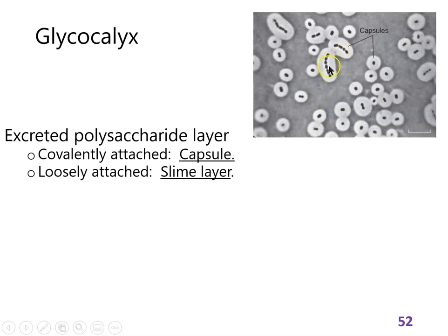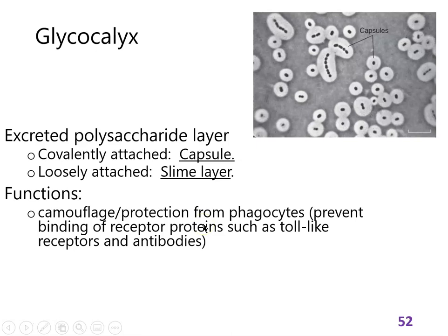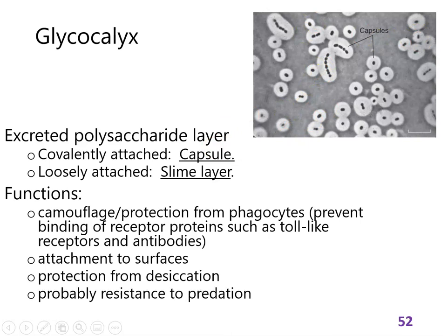The capsule might be much bigger than the bacteria itself. Why would they make a layer of polysaccharides around them? It camouflages them — it makes it hard for them to be phagocytosed by macrophages, neutrophils, or dendritic cells. It also prevents proteins from binding to them. We don't make antibodies very well against carbohydrates — we make antibodies against proteins — so if a cell wraps itself in carbohydrates, our antibodies will just bounce off. They also help with attachment and help the cell avoid drying out. They're probably older than vertebrates and immune systems, likely originally evolving to protect these bacteria from being eaten by protists.